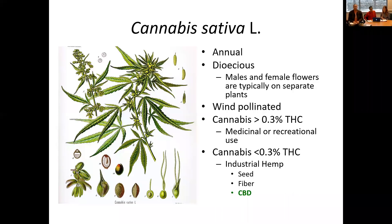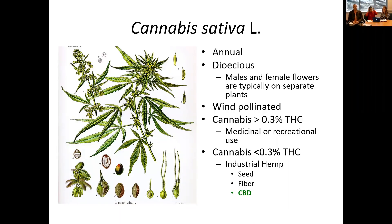The working definition is: cannabis that has greater than 0.3 percent THC by dry weight falls into the medicinal or recreational use category, where it has a high amount of the psychoactive compound THC. Whereas industrial hemp falls in the less than 0.3 percent THC by dry weight category. We just heard about seed and fiber production, and the rest of our presentation will focus on CBD or cannabidiol.